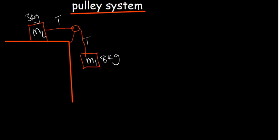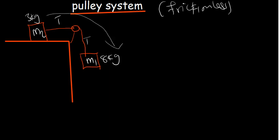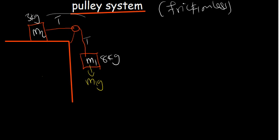Let's consider the frictionless case first. Without friction, the only force driving the system is the weight of m1, which is m1g. Since m1 is the only force causing the object to go down, that is our net force.